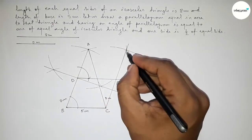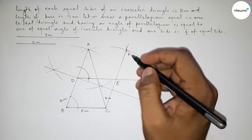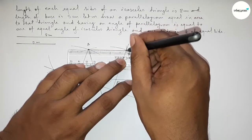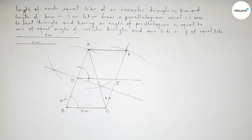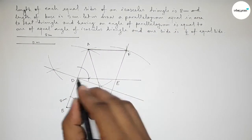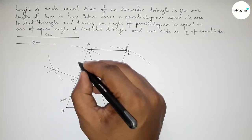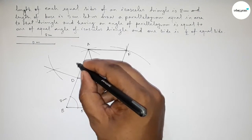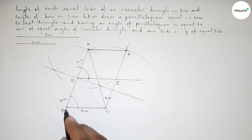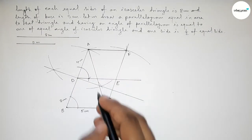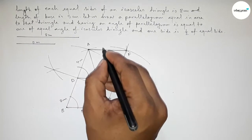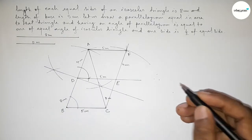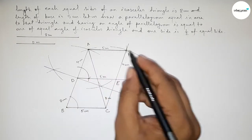Now taking the lengths BD and AD, we mark point F. We join A to F to complete the parallelogram. Point D bisects line AB into two equal parts, so each half is 4 centimeters. The parallelogram ADEF has one side of 4 centimeters, which is half of 8, and the other sides are 5 centimeters each.